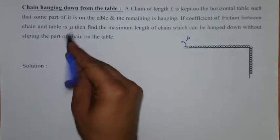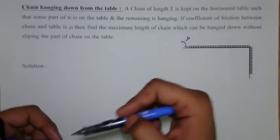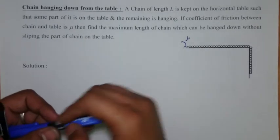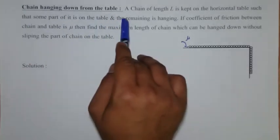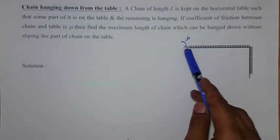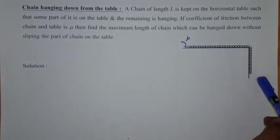Here we are with a new problem, chain hanging down from the table. A chain of length L is kept on a horizontal table such that some part of it is on the table and the remaining is hanging. It's like this, the length of the chain is L, some part is on the table and other is hanging down.